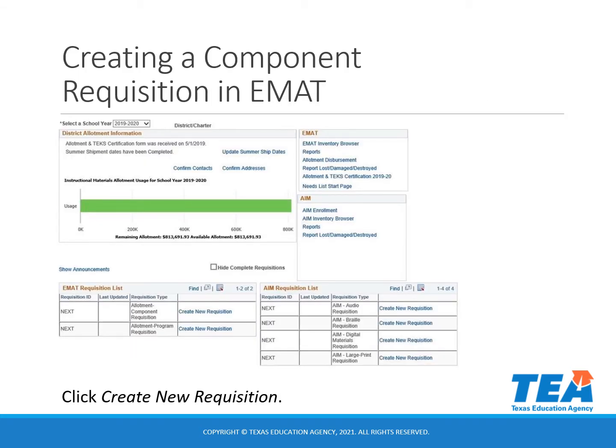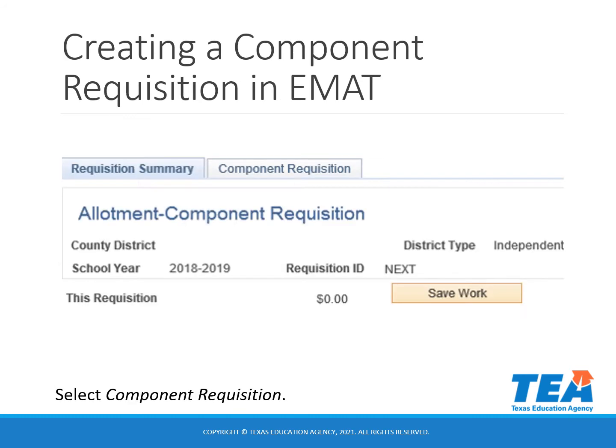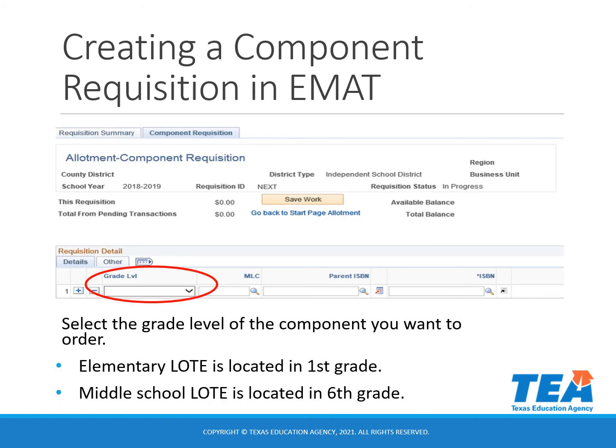To create a Component Requisition in EMAT, click Create New Requisition from your District Start page. Select the Component Requisition tab. Select the grade level of the component you want to order. Elementary languages other than English instructional materials are located in first grade. Middle school languages other than English instructional materials are located in sixth grade.